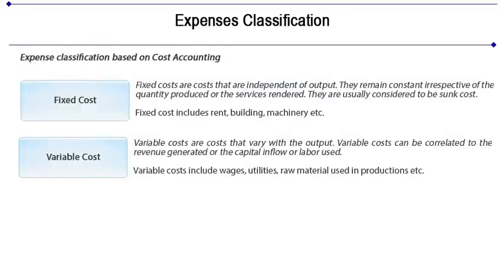Cost accountants classify costs so that managers of the business can take informed decisions for their organizations. The two major cost classifications are fixed cost and variable cost. Fixed costs are costs that are independent of output — they remain constant irrespective of the quantity produced or services rendered. They are usually considered to be sunk costs. Fixed costs include rent, building, cost of owning a building, property, machinery, land, etc.